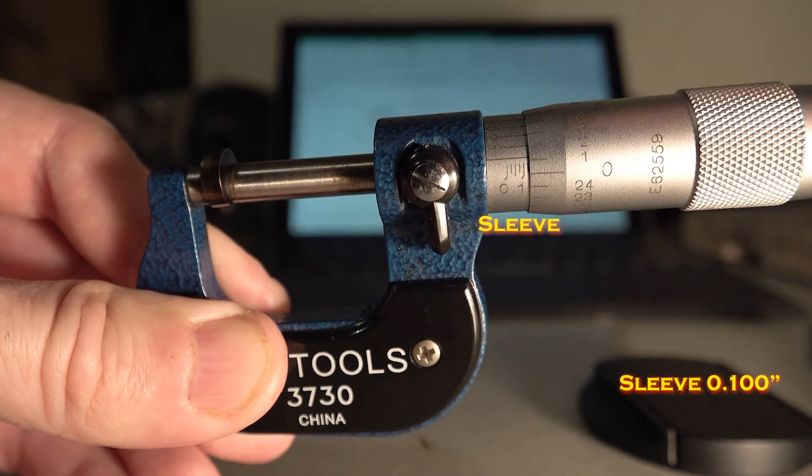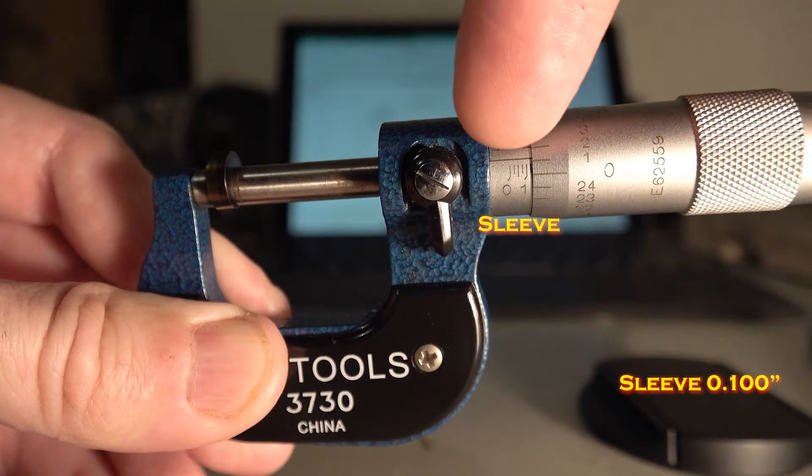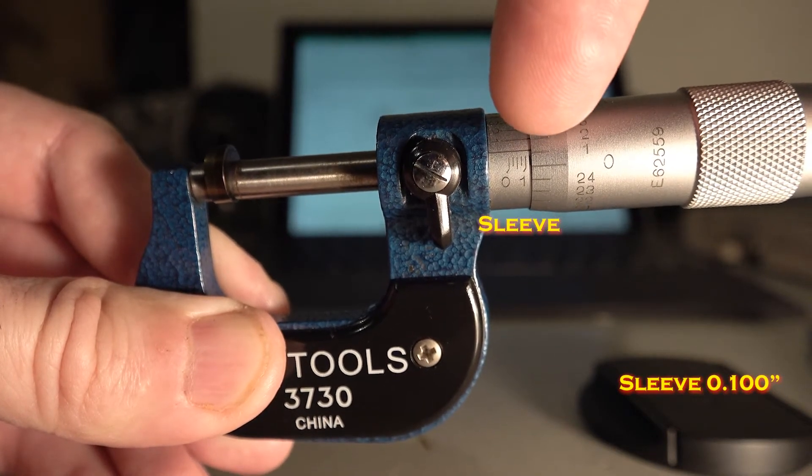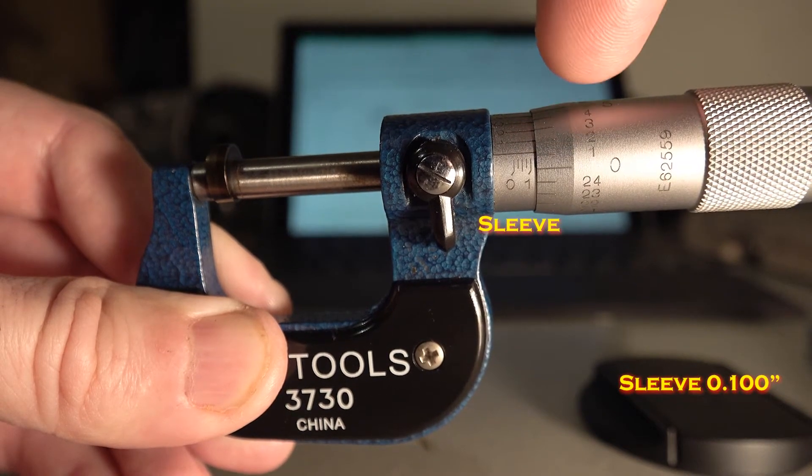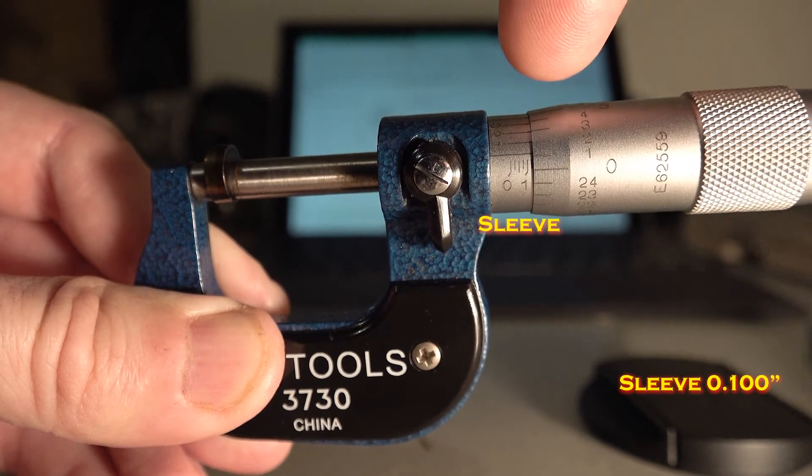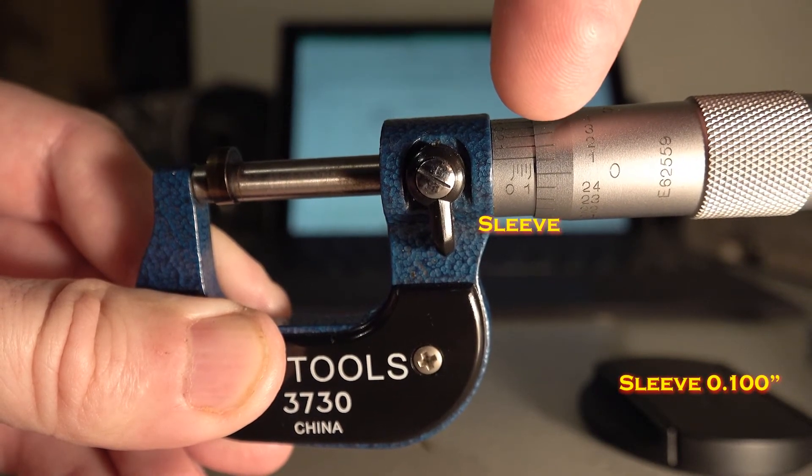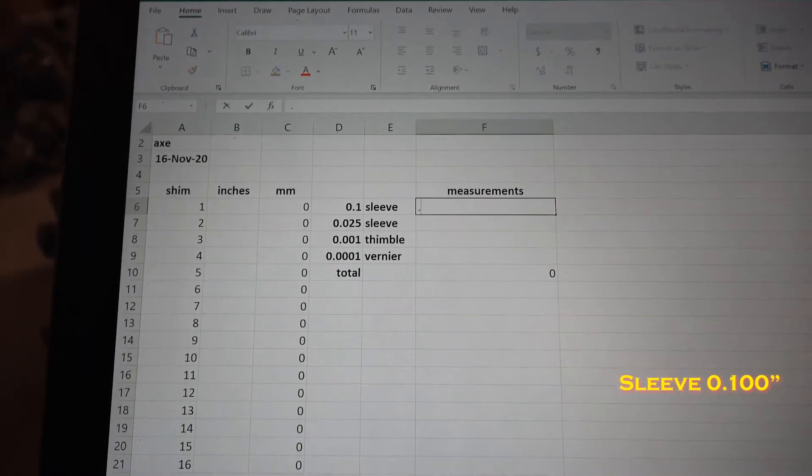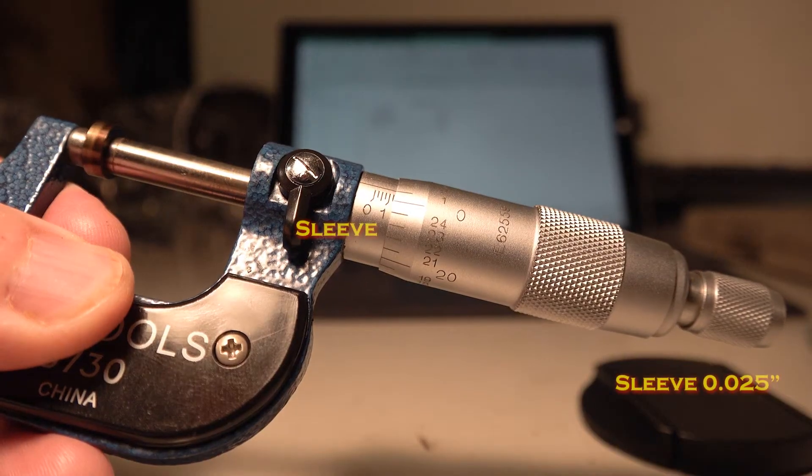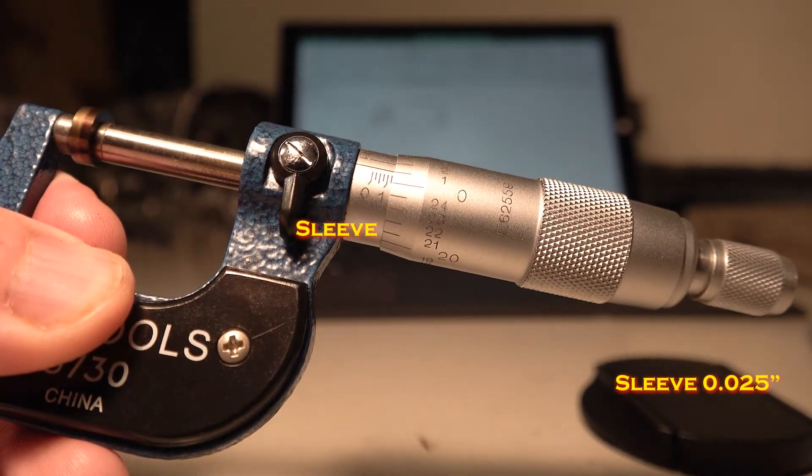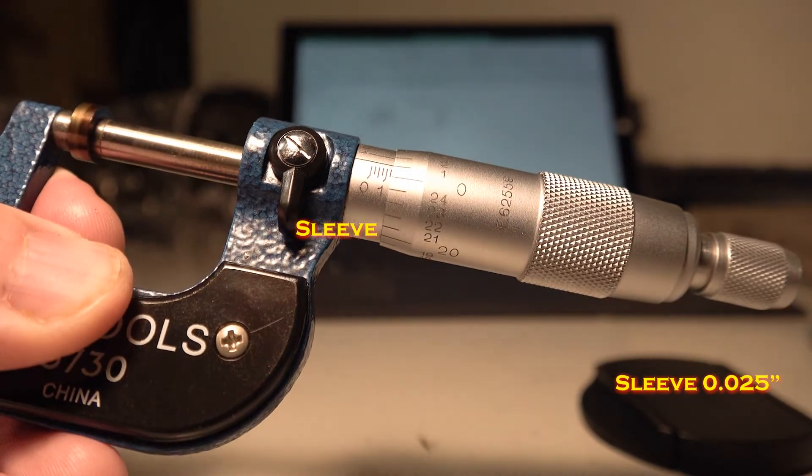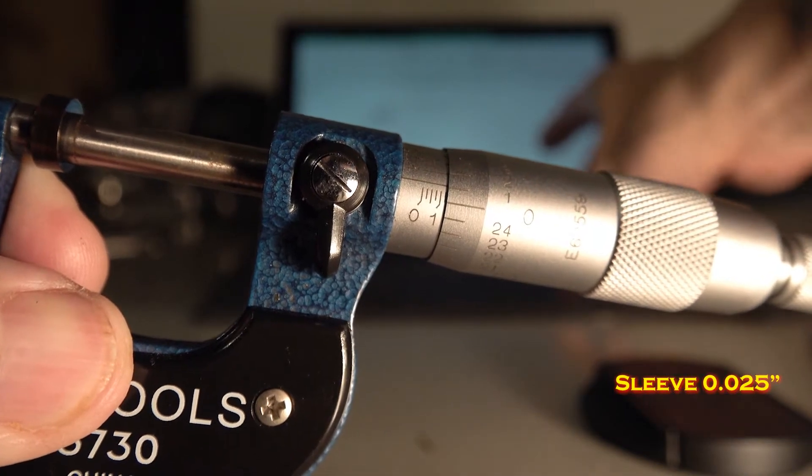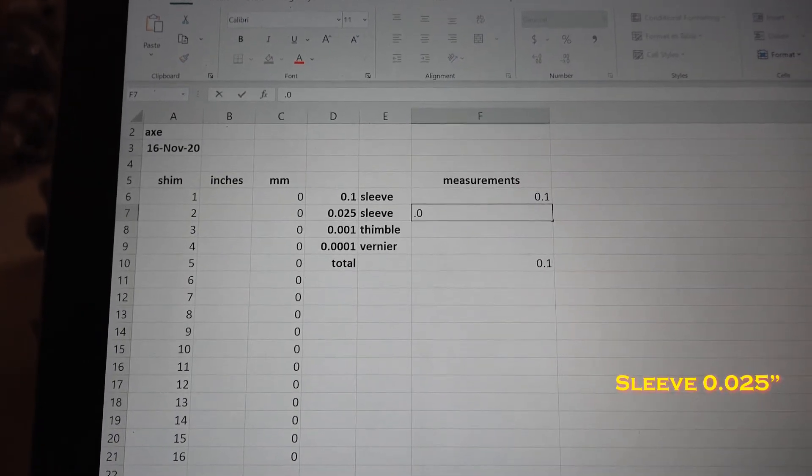Look at the vertical lines on the sleeve down there, and you can see it goes zero, and then little lines, and then the 1. So that 1 is the last whole number you see before the thimble starts, and it represents 100 thousandths. So I'm going to put 100 thousandths on my spreadsheet for that line. Now you see on the sleeve, there's that one little line after the 1, and that represents another 25 thousandths. So I'm going to put another 25 thousandths into my spreadsheet.